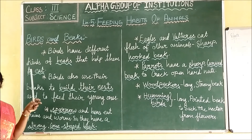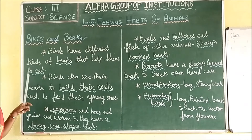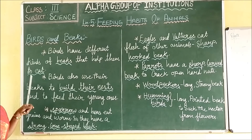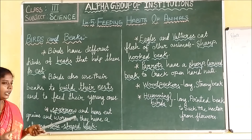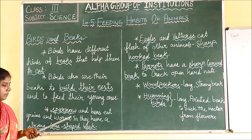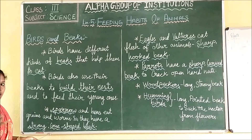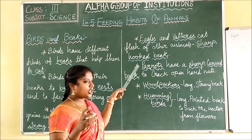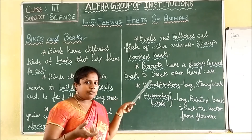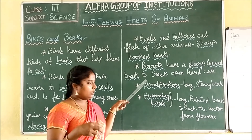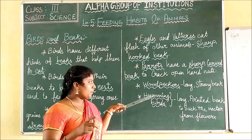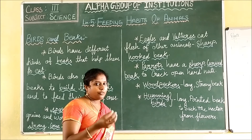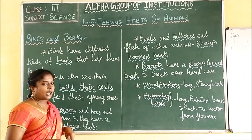Birds have different kinds of beaks. It is used to eat the food and to build their nest and to carry food and feed it for the young ones. Sparrow and hens eat grains and earthworms, so they have a strong cone-shaped beak. Eagles and vultures eat flesh of animals, so their beaks will be sharp and curved. Parrots have a short curved beak to crack open the nuts. Woodpeckers will have a long and sharp strong beak. Hummingbirds will have a long pointed beak to suck the nectar from the flowers.